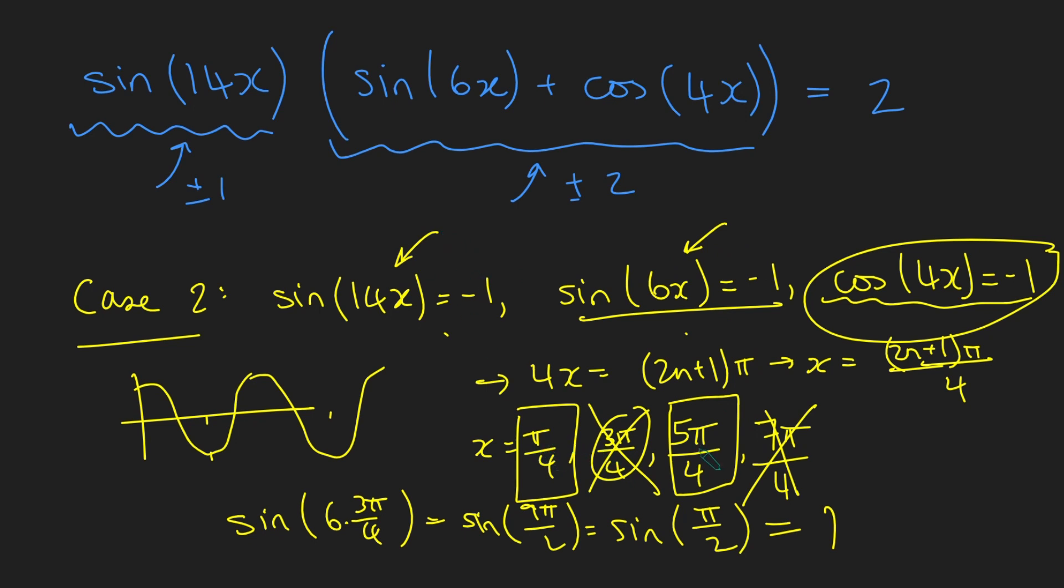So we started off with a pretty interesting equation involving tan, cot, sine, and cos. And using a very nice trick that you've got something times something, and thinking about their magnitudes, we can narrow it down to two cases. We check the first case, there were no solutions. And in this case, we get just two solutions, pi over 4 and 5 pi over 4. And those are our two solutions to this problem.